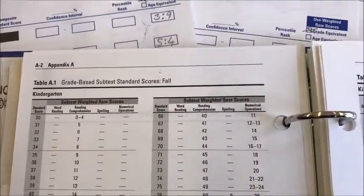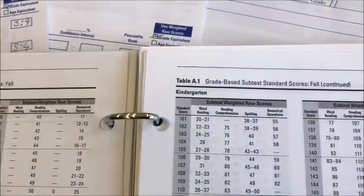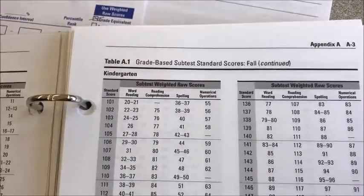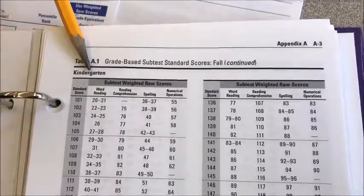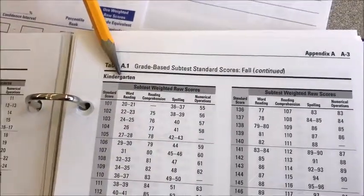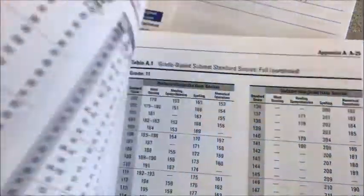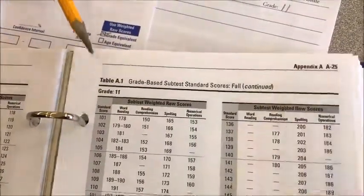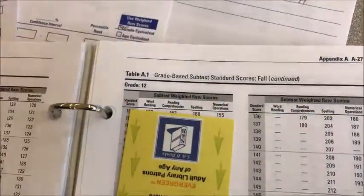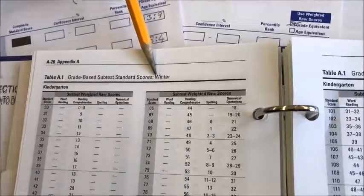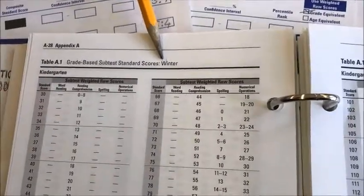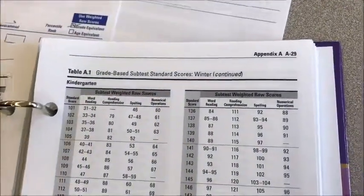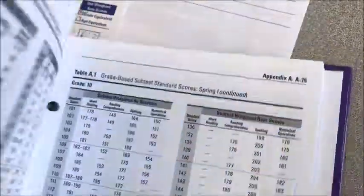Within each term, each grade level also has its own section. So if you look here, it goes from kindergarten right through to grade 11 and then grade 12. The same applies to winter — each grade has its own section from kindergarten to grade 12 — and also to spring.